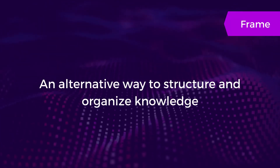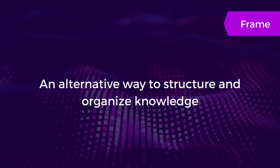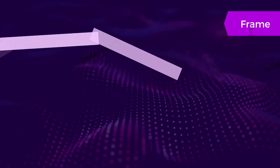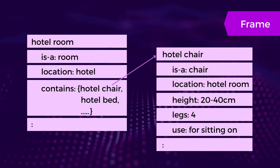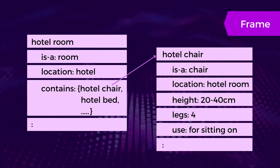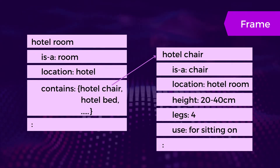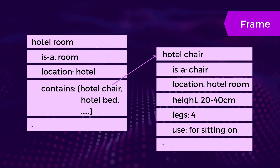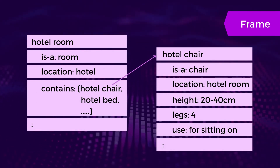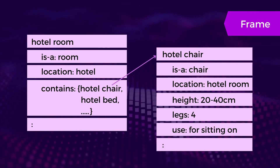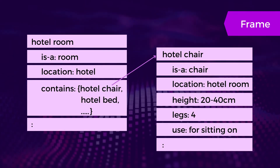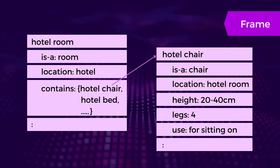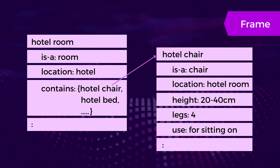Another way to represent knowledge is by using frames. It is an alternative way to structure and organize knowledge. Each frame has a name and slots which can be filled by values, procedures for calculating values, or pointers to another frame. This example has two frames: the first describes a hotel room while the other describes a hotel chair. You can see that the hotel room frame points to the hotel chair frame, showing the relationship between them.